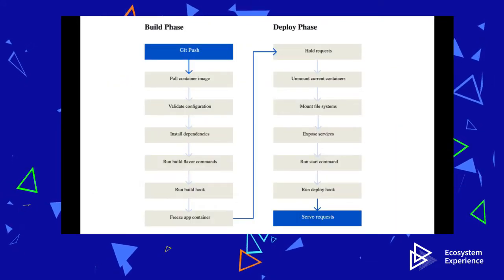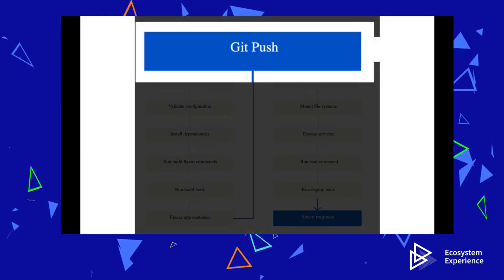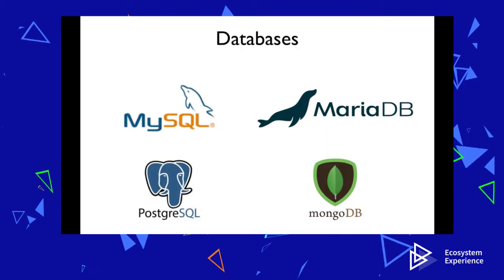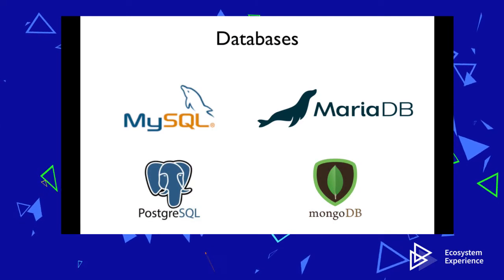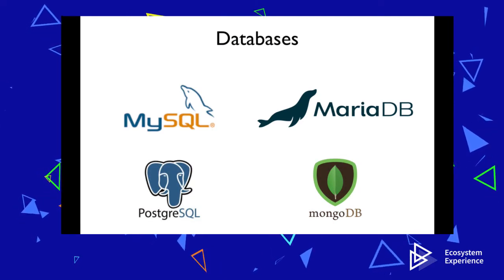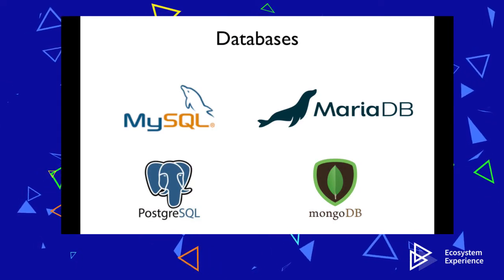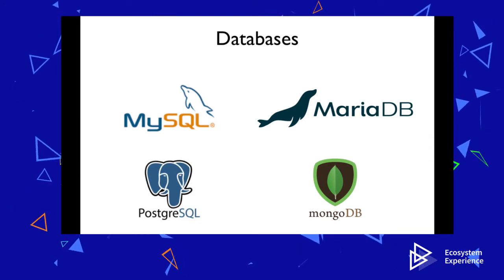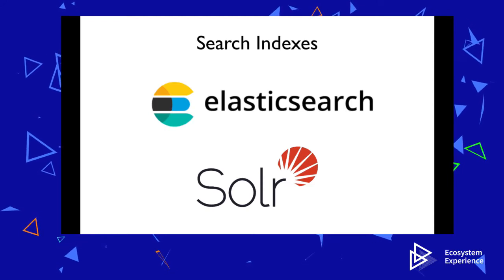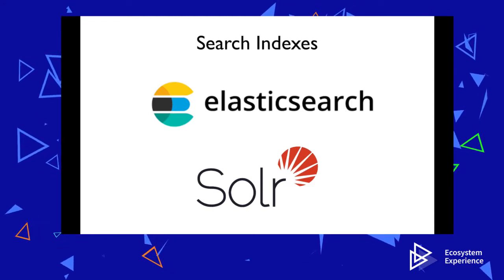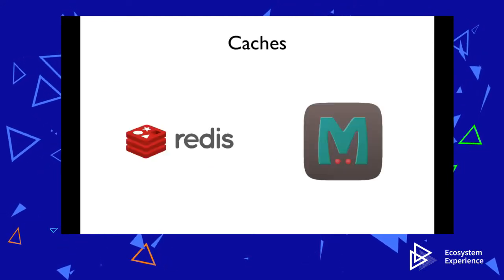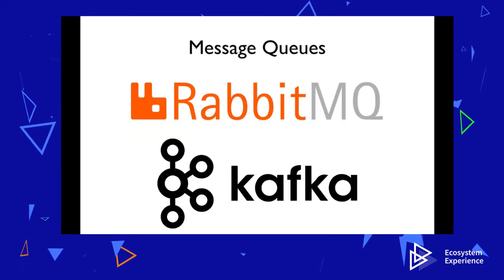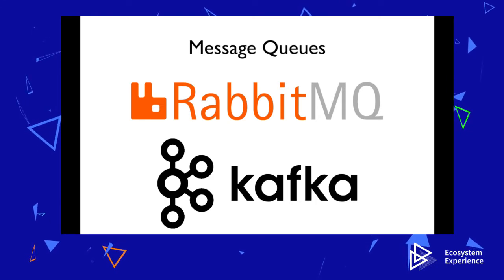It is GitOps-driven, meaning the way you deploy your application is by using normal Git commands. The OVH Cloud supports the deployment of many back-end services, including databases such as MySQL, MariaDB, PostgreSQL, or MongoDB. Search indexes such as Elasticsearch or Solr. Caching services such as Redis or Memcache. And message queues such as RabbitMQ or Kafka.